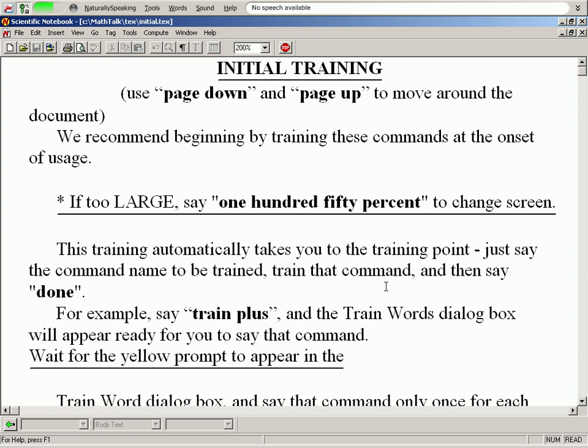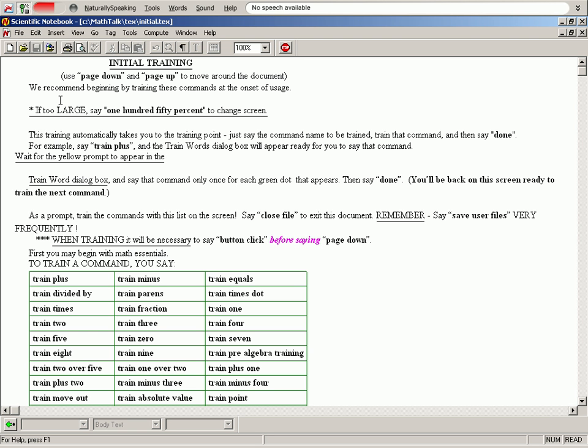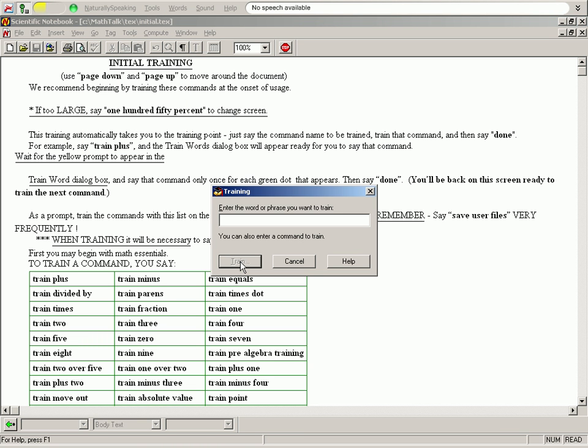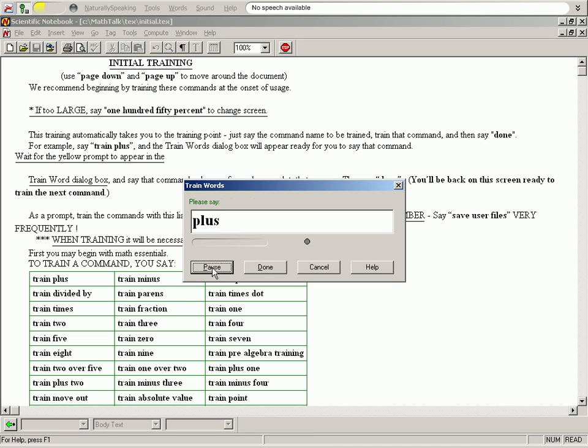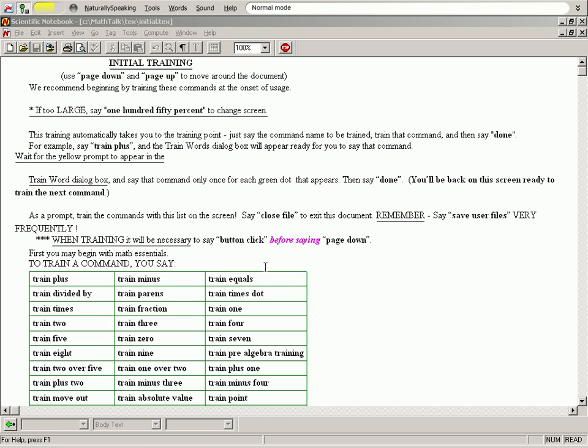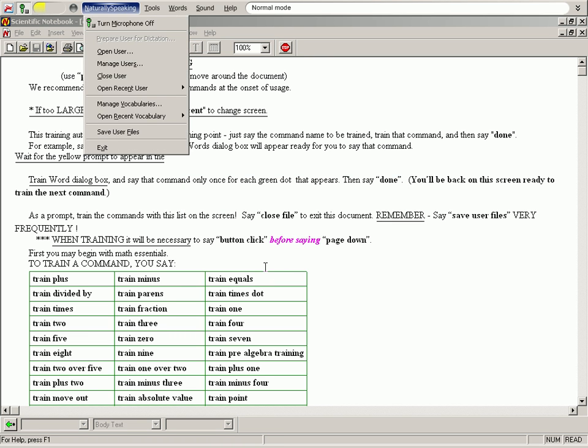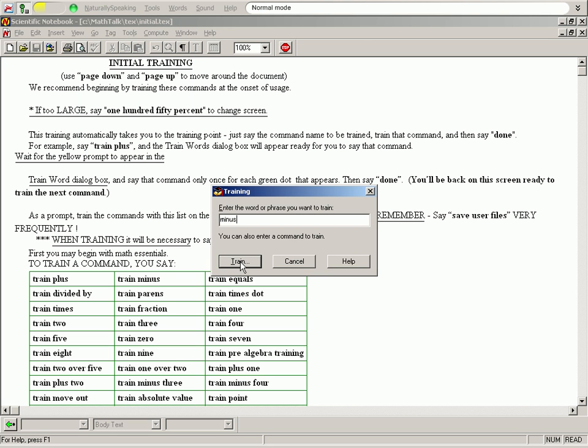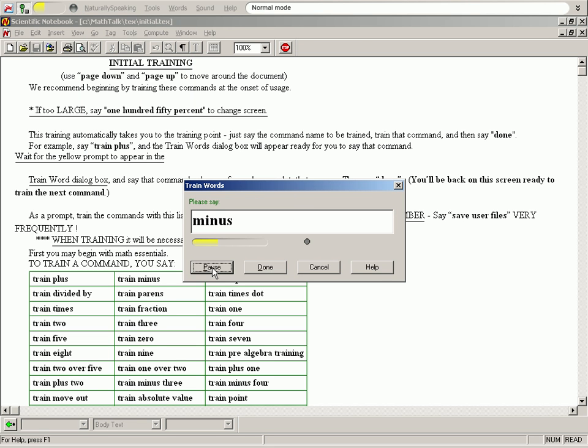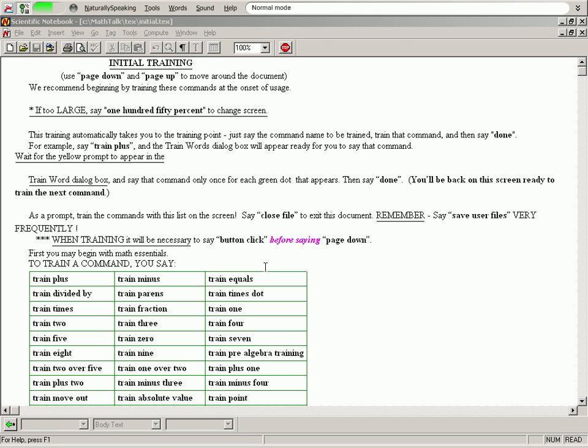Train Initial Commands. 100%. Train Plus. Plus. Done. Train Minus. Minus. Done. Button Click. Close File.